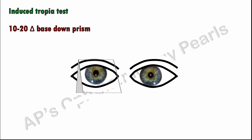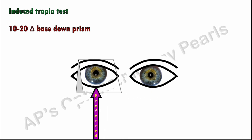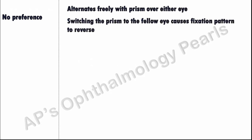Fixation preference will determine the subsequent behavior of the eyes. Patients with equal vision and no fixation preference will alternate between the two images. If the eye without the prism is the preferred eye, there will be no change in the position of the eyes. However, if the eye behind the prism is the preferred eye because of better vision, then the weaker non-preferred eye without the prism will also move up. No fixation preference is indicated either when there is free alternation of the eyes, or when switching the prism to the fellow eye causes the fixation pattern to reverse.